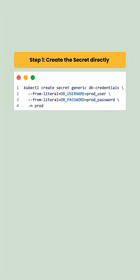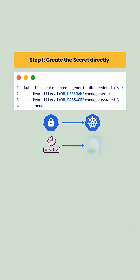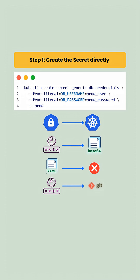First we will create the secret directly in production with this command, which creates the secret directly in Kubernetes, stores the values internally as base64, and does not require any yaml file. This also keeps credentials completely out of git. At this point the secret exists only inside the cluster.